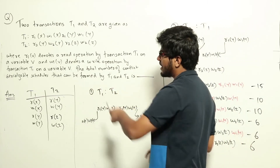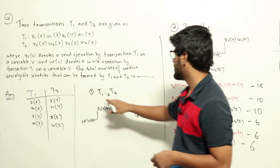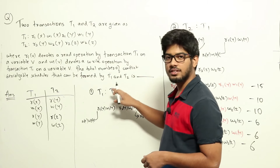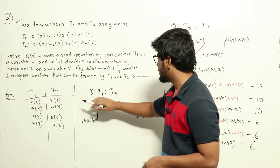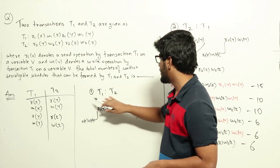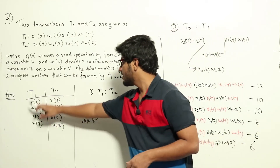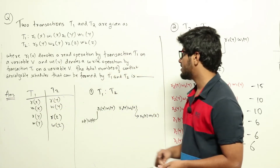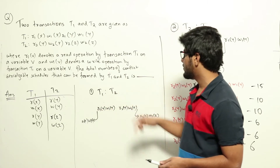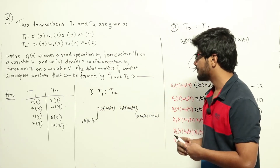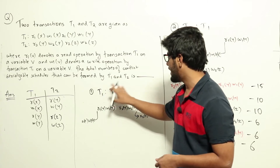For two transactions T1 and T2, there are two possible serial schedules: T1 followed by T2, and T2 followed by T1. We need to count how many schedules are conflict serializable to each of these. For the serial schedule T1→T2, the conflicting operations should appear in the same order in any equivalent schedule.